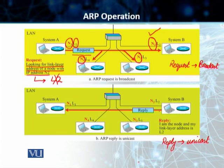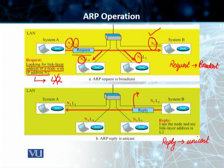Once system B receives the broadcast, it recognizes its IP address and creates an ARP reply. In this case, this is no longer a broadcast — this is a unicast. It uses the unicast address of system A and sends a reply directly back to system A. The ARP reply contains L2, which is the physical address or link layer address of system B.